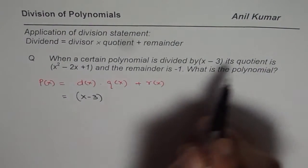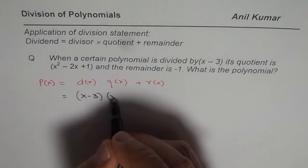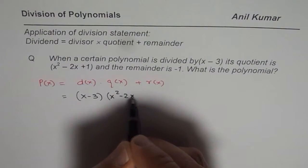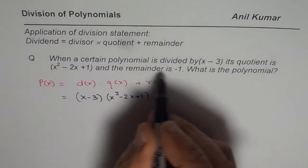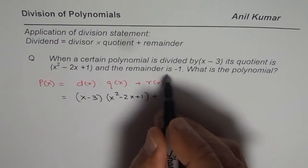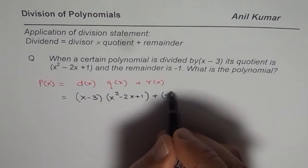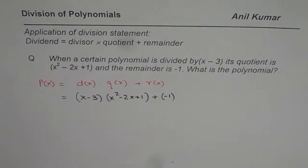Quotient is x squared minus 2x plus 1, just multiply by x squared minus 2x plus 1 and the remainder is minus 1, just add minus 1 here. So that is how you would get the polynomial.